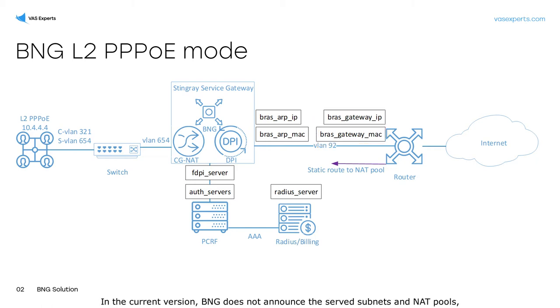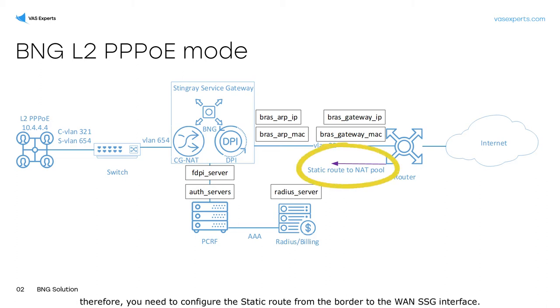In the current version, BNG does not announce the served subnets and NAT pools. Therefore, you need to configure the static route from the border to the WAN SSG interface.